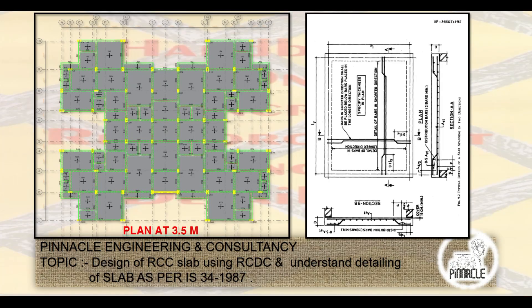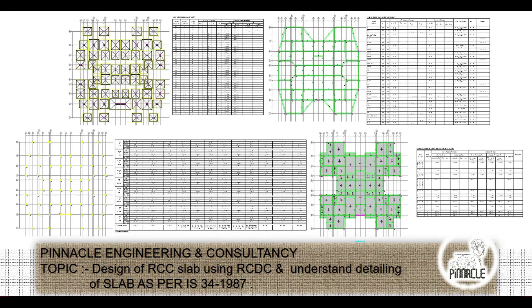This is the floor at 3.5 meter first floor level. We also discuss IS 34 1987 detailing of beams. This covers designing of columns, designing of beams, and designing of slabs as per IS 34 1987, which is basically a detailing code.